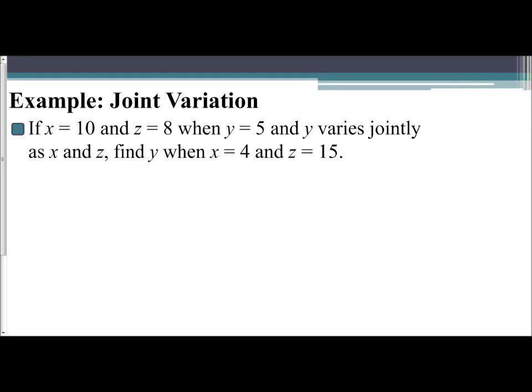In this video, we're going to look at an example of joint variation. If x equals 10 and z equals 8 when y equals 5, and y varies jointly as x and z, find y when x is 4 and z is 15.